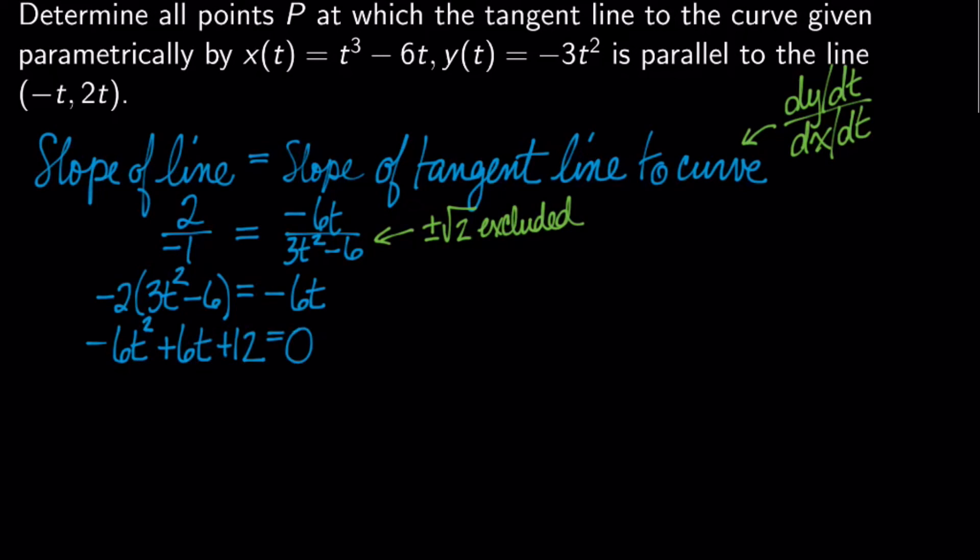And then I'm going to distribute and rearrange and make everything pretty. And then I'm going to factor this out real nice. It factors out no problem. And my solutions here are t equals negative 1 comma 2. And I'm feeling really good.